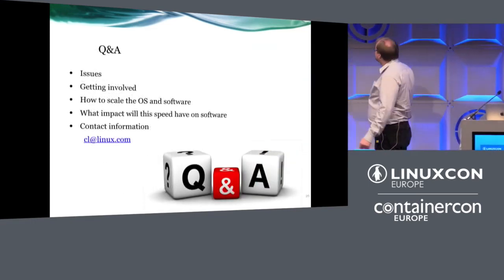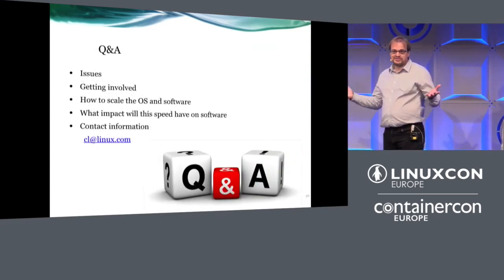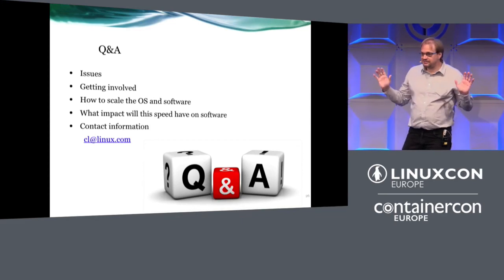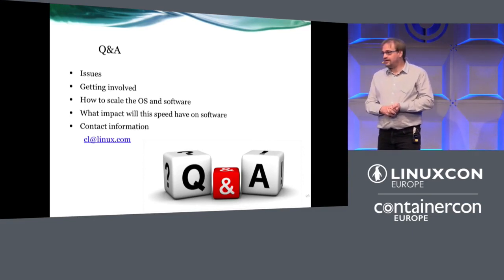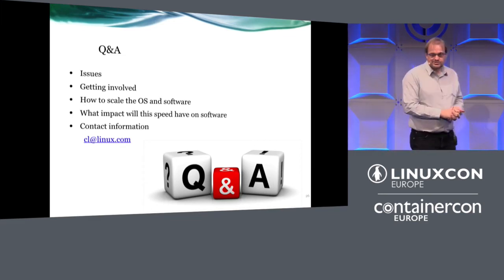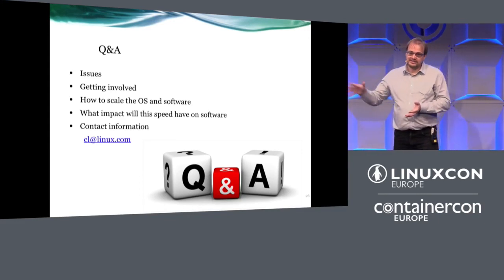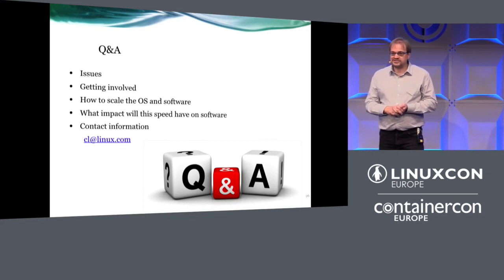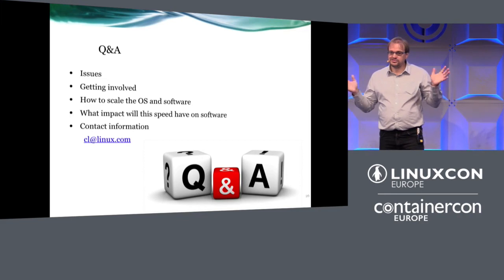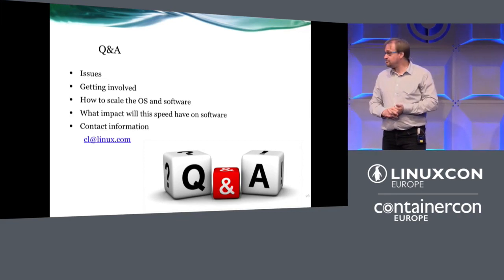We have meetings at the Kernel Summit and Plumber's Conference to talk about these issues and find ways to improve the situation. There's also an extra meeting the following Saturday outside those conferences to deal with issues we couldn't get through during the Plumber's Conference day. There's also the Linux RDMA mailing list on vger.kernel.org if you're interested in what's going on there.